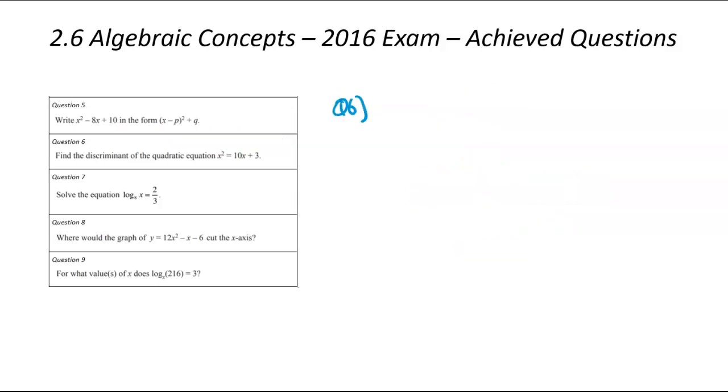We're now on to question number 6. This question, find the discriminant of the quadratic equation, x squared equals 10x plus 3. So let's start off by jotting down that equation, x squared, 10x plus 3. Hopefully you remember what the discriminant is. If you remember the quadratic equation, x is equal to negative b plus or minus the square root of b squared minus 4ac all over 2a. The discriminant is the part that sits in that square root. In our case, we're looking just at b squared minus 4ac.